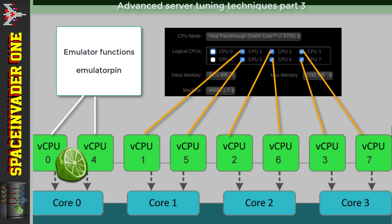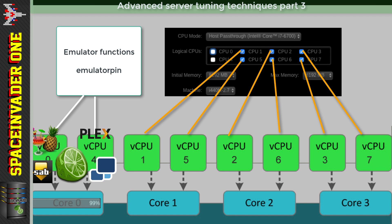Pinning the emulator functions away from the CPUs pinned to the VM can in some cases decrease latency. These functions don't use a lot of resources, so in my opinion it's best to pin them to all of the remaining virtual CPUs rather than just one - that way Unraid can manage the load over the existing cores. Doing this will normally improve latency, but if you pin this function to a core that's already heavily loaded it could have a negative effect, so test and try things out.